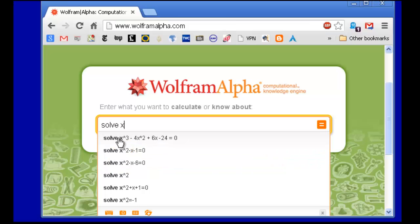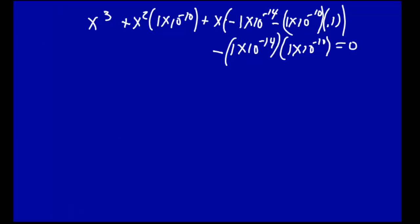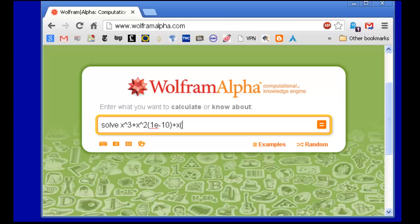So we have x³ + x × 1 × 10⁻¹⁰, 1e-10. That was sorry, x². x². Plus x. So what we have here, minus 1 × 10⁻¹⁴. Minus. Let's see, it was 1e-10 times 0.1.